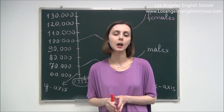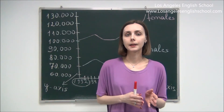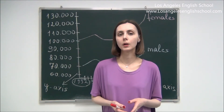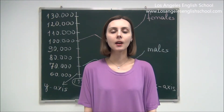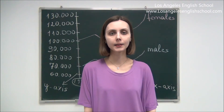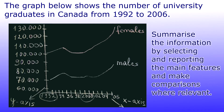One solid line shows the number of female graduates and this blue solid line shows the number of male graduates. In your task one on your IELTS exam you can see different kinds of information — for example, it can be a pie chart or a bar graph. Today we're going to have a look at the line graph. The graph below shows the number of university graduates in Canada from 1992 to 2006. Summarize the information by selecting and reporting the main features and make comparisons where relevant.